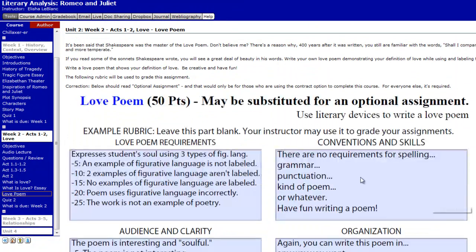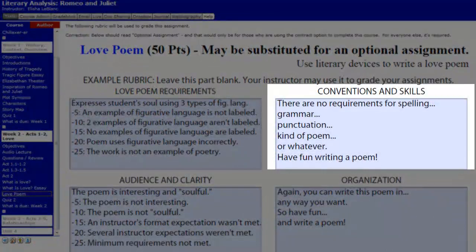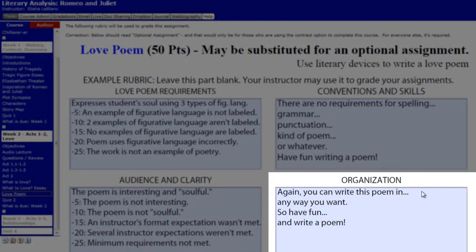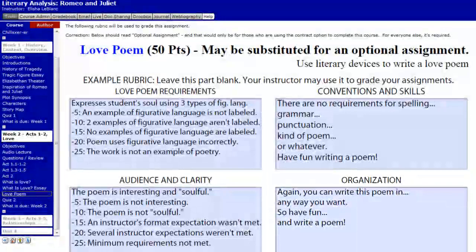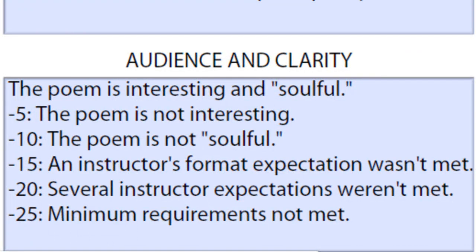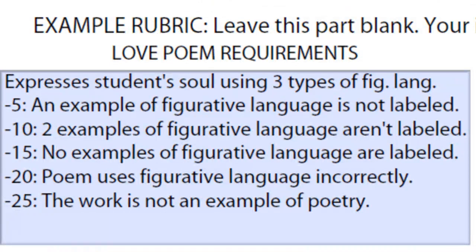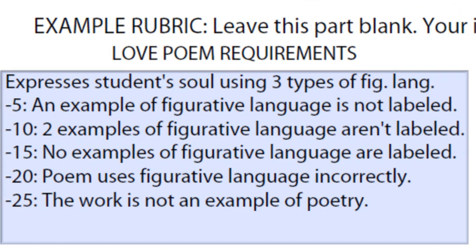Then you're going to write a love poem. A lot of people tell me this is one of their favorite things to do in this class because you don't have to worry about spelling, grammar, punctuation, or what kind of poem it is — no haiku, whatever. Have fun writing the poem and organize it any way you want. It's worth 50 points. What I'll be grading you on is: one, are you writing in a way that's soulful? If the poem is superficial or shallow, I won't give full credit. Also, I want you to find three different types of figurative language, use them in your poem, and label them correctly. I've provided resources throughout this unit on different types of figurative language.